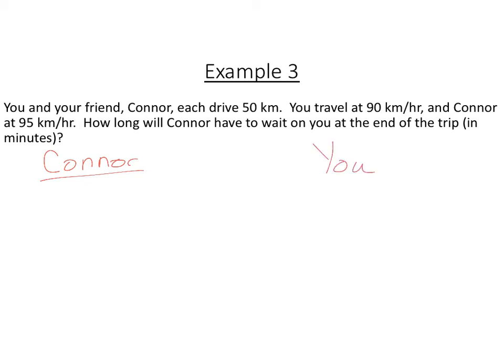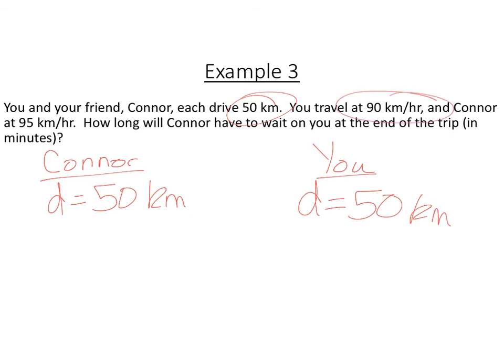So I got Connor and you, which would be, I guess, you or me. I'm not sure. All right, so the distance traveled is 50 kilometers. See that right there? And we're both going that. Okay, so distance 50 kilometers. All right, now you travel at 90 kilometers per hour. Connor travels at 95 kilometers. Oh, snap. Whoops. Kilometers per hour.